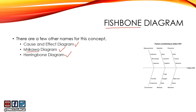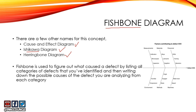It's called Ishikawa because the person who came up with this concept was named Ishikawa. Now, what's exactly happening in this figure is how the fishbone diagram works. You use this tool to figure out what caused a defect, and you do so by listing all categories of defects that you and your team have identified so far. So these are the categories you see here: Measurement, Materials, Personnel, Environment, Methods, Machines.